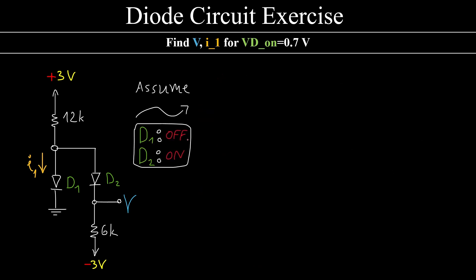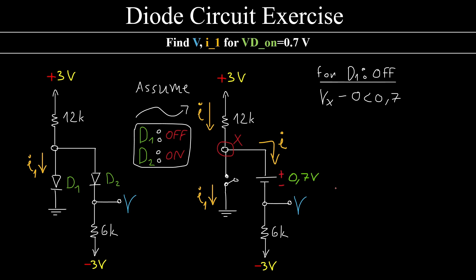It's fine. I'm going to make another assumption. I'm going to say, what if D1 is off and D2 is on? In that case, D1 will be represented by an open circuit. D2 must be represented by a battery. And I'm going to say for D1 to be off, Vx minus 0 must be less than 0.7V. For D2 to be on, Vx minus V must equal 0.7V. Now, if I take Ohm's law for this resistor and this resistor, like previously, the same thing that we did before, I'm going to have to solve this system.